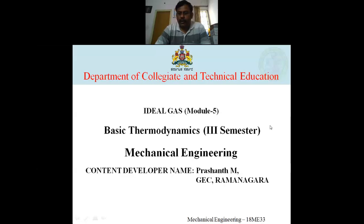In the last class, we learnt about what is an ideal gas and we discussed about Boyle's law and Charles' law. Using these two laws, we arrived at the characteristic gas equation or ideal gas equation, which is PV = RT or PV = MRT. We also learnt about Avogadro's law, defined the number of kg-moles as mass divided by molecular mass, defined one mole as 22.4 cubic meters, and derived the universal gas constant as molecular mass multiplied by the characteristic gas constant.